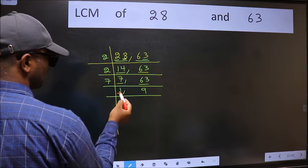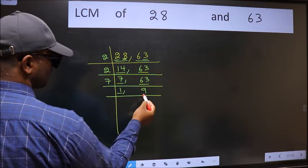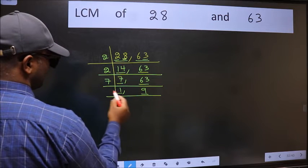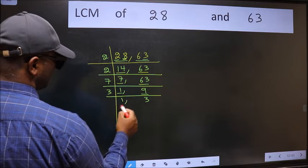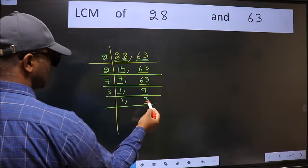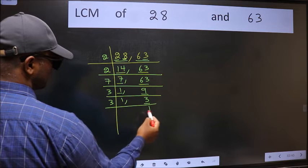Now we got 1 here. So focus on the next number 9. 9 is 3 times 3 is 9. Now here we have 3, 3 is a prime number. So 3 times 1 is 3.